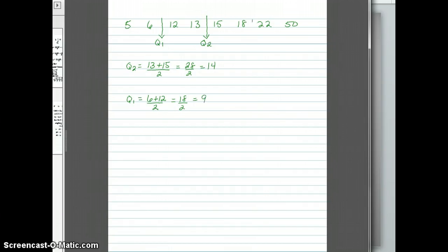Now to find our Q3, we're going to look at the values from 15 and up. And that median falls between 18 and 22. So our Q3 is 18 plus 22 divided by 2, or 40 divided by 2, which is 20. So that means that our quartiles are as follows. First quartile is 9, second quartile is 14, and the third quartile is 20.